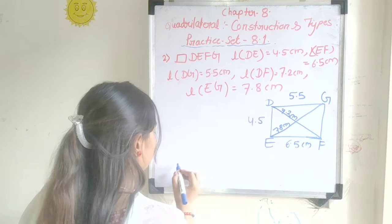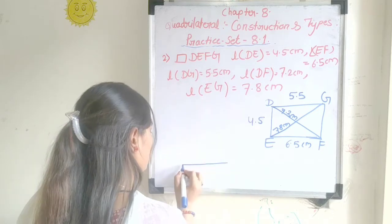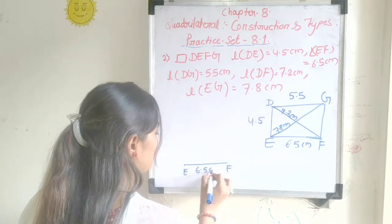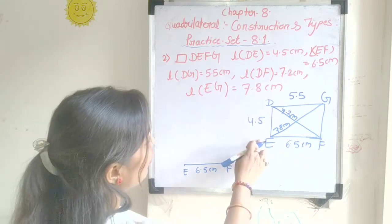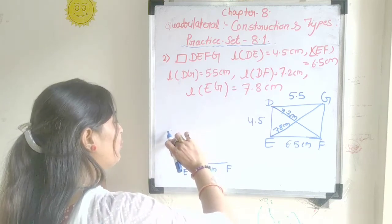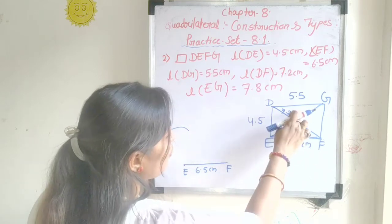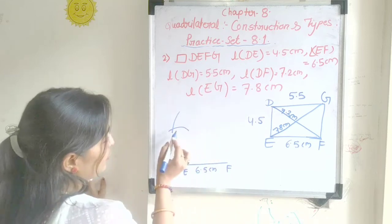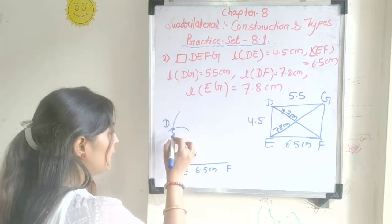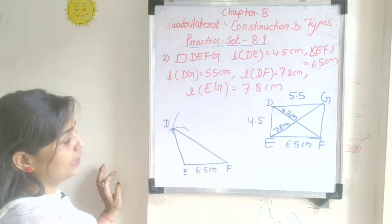First we draw the base EF at 6.5 cm. Next, from point E we draw an arc of DE = 4.5 cm. Then we draw the diagonal DF = 7.2 cm from point F. The point where these two arcs intersect gives us point D.